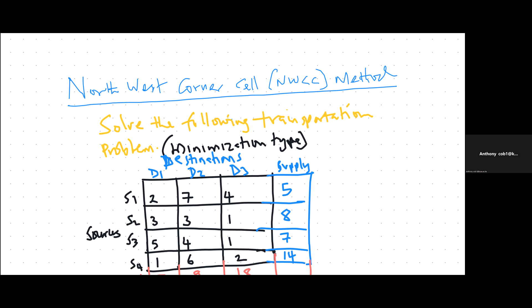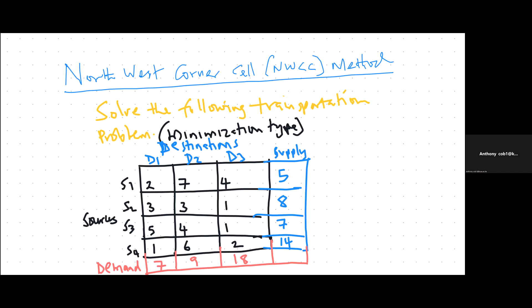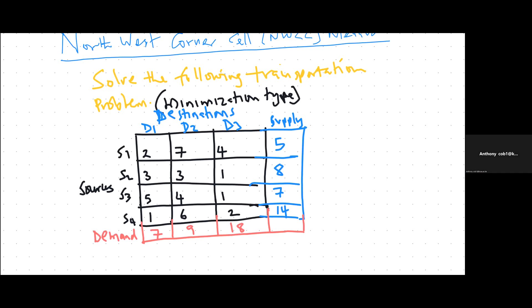Now we are discussing one of the methods of obtaining the initial solution, and that is the northwest corner cell method. We are going to illustrate that using this example, where you are required to solve the following transportation problem, and this is a minimization type of problem. As we mentioned earlier, transportation problems can either be minimization type or maximization type. By default, transportation problems are minimization type, but you can often get problems that are of maximization type.